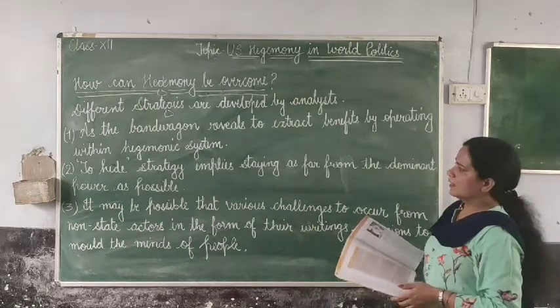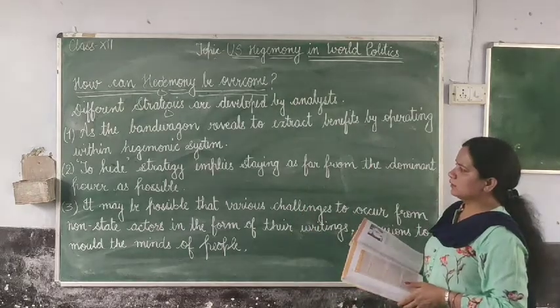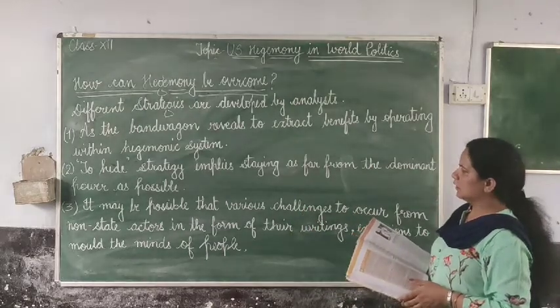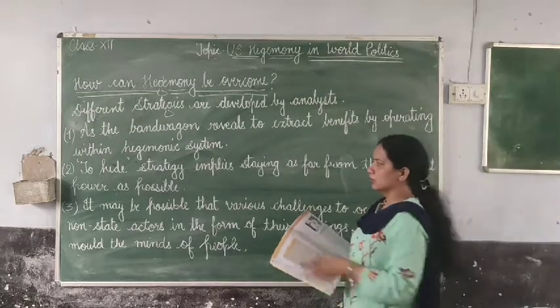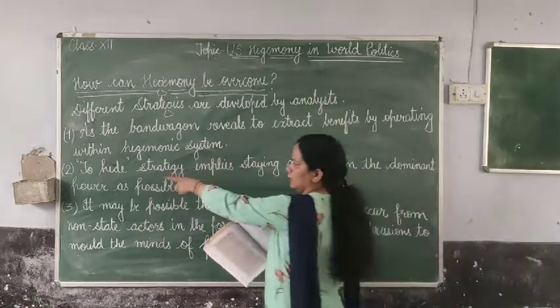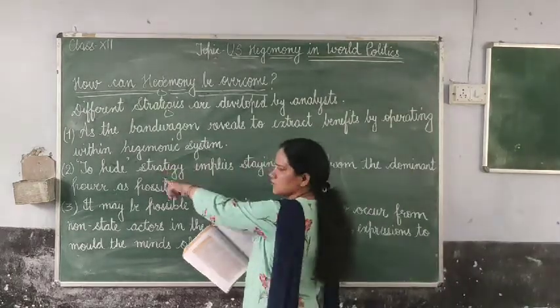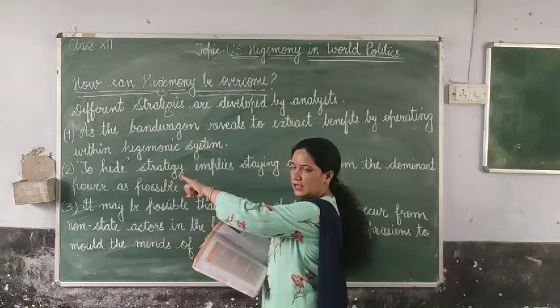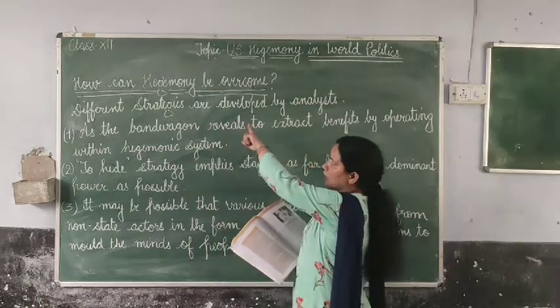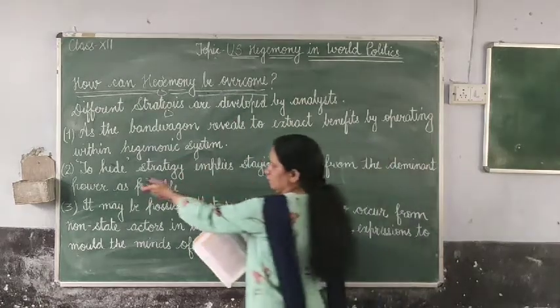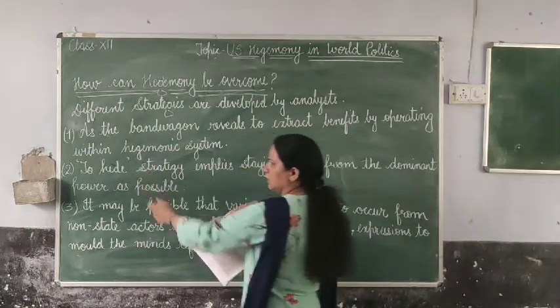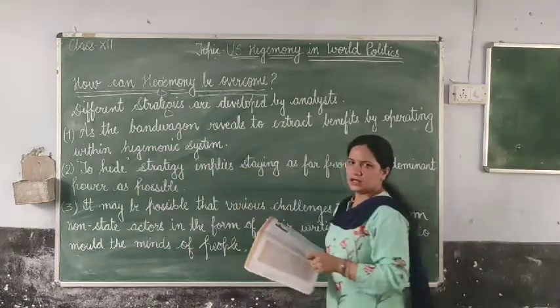The next strategy is 'hide' — this implies staying as far from the dominant power as possible. To hide is a strategy to overcome hegemony.